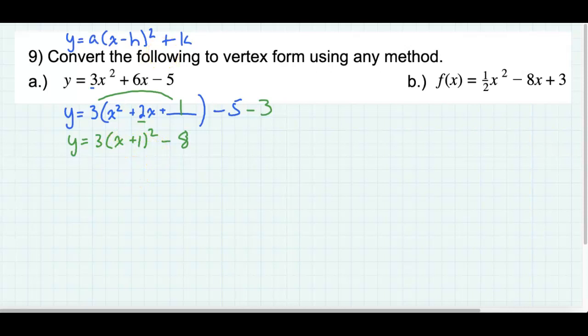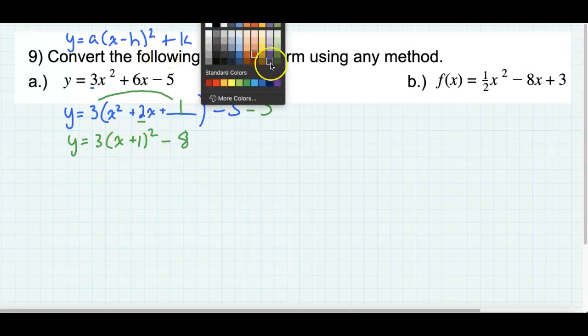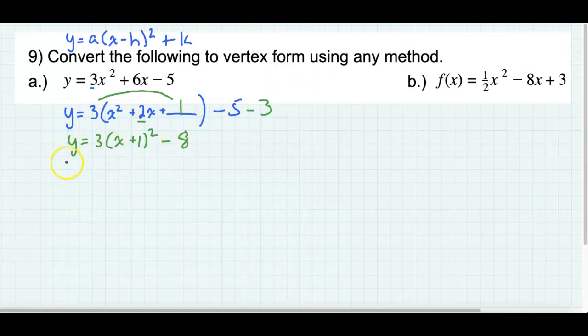A more practical method probably would be to just find out, well, what's the vertex? I need to find out what h and k are. h is the axis of symmetry, right? How do we find that? Negative b over 2a. So we've got an a value here, a b value here, and a c value here. Okay, so how do we do that?